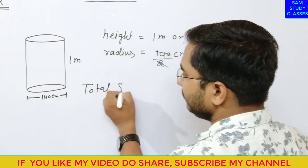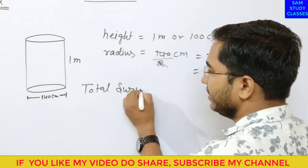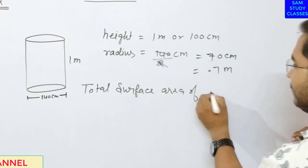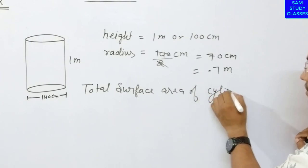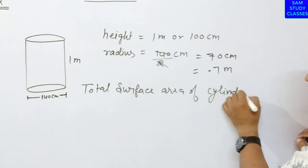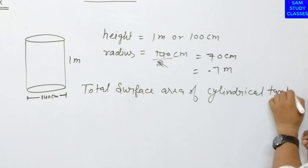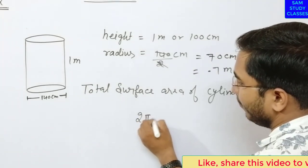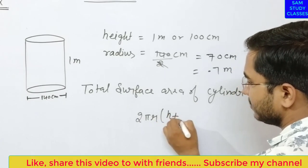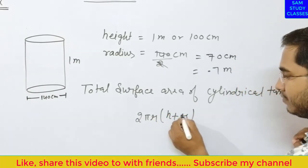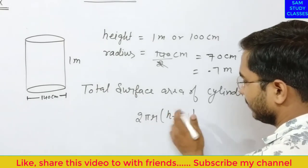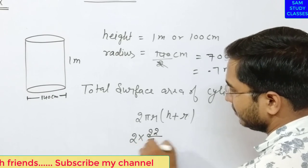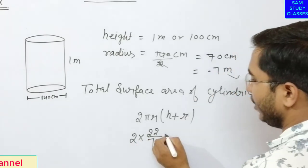Total surface area of cylindrical tank equals 2πr(h + r). The value of 2 is 2, value of π is 22/7, value of r is 0.7 meter.